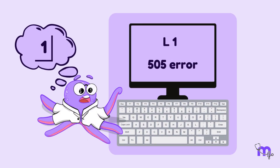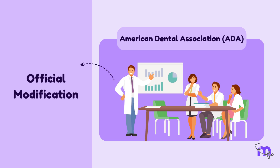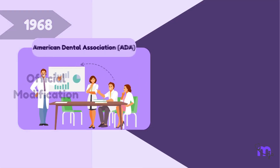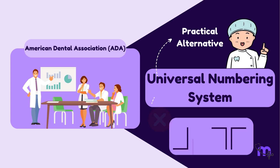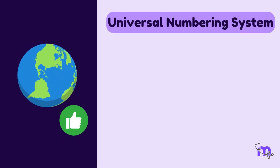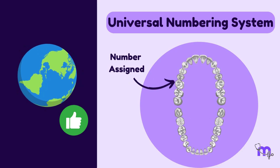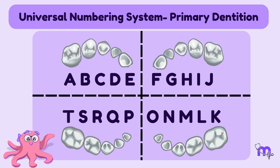Due to the challenges associated with entering symbolic notations using standard keyboards, the American Dental Association made an official modification in 1968. They endorsed the Universal Numbering System as a practical alternative — a system that doesn't need any symbols to represent the quadrants. It is one of the most widely recognized tooth numbering systems, where a unique number is assigned to each tooth.